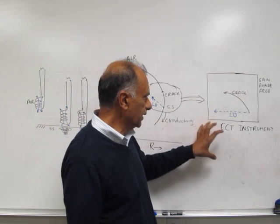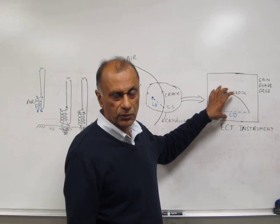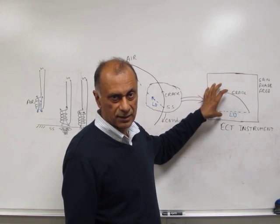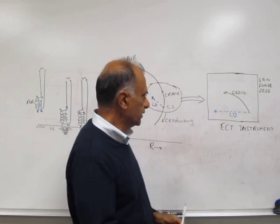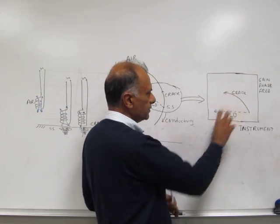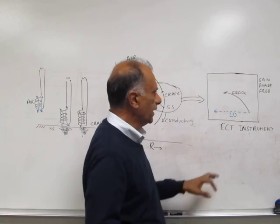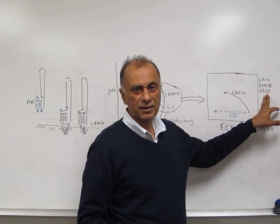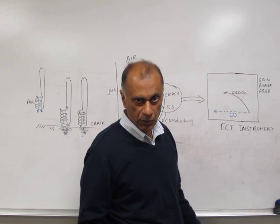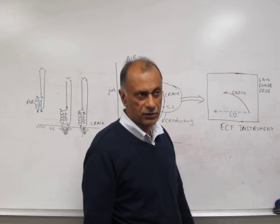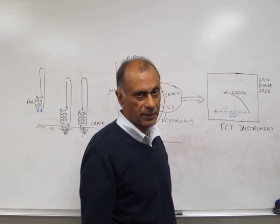The basic controls on the eddy current instrument are: gain, which is used to increase or decrease the signal level; phase, which is used to rotate the signals in order to bring the lift-off to horizontal; and frequency, which is matched to the frequency of the probe — normally in the range of 50 kilohertz to 1 megahertz.